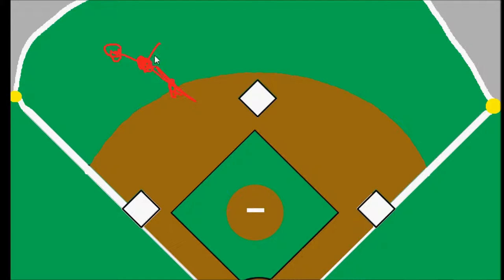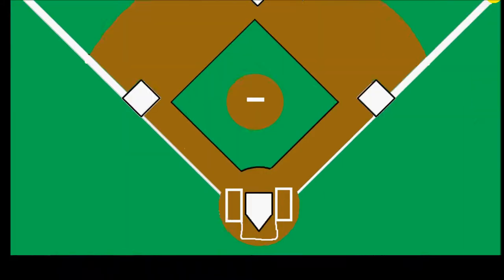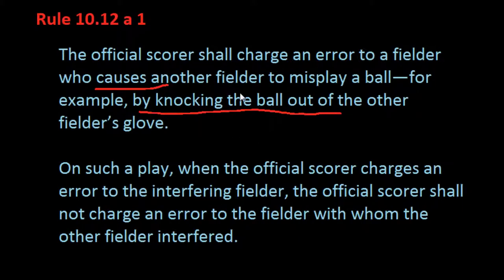Remember, not always do we have to charge an error. The rules which define an error say that the fielder only has to display ordinary effort — quote-unquote ordinary effort. So maybe if the ball was hit into the gap, say the left fielder is running over here, the center fielder started here, and they both have long runs, maybe one knocks into the other and the ball gets away — maybe that won't necessarily be an error at all. Maybe it'll be a hit. But for the most part, remember, it's the fielder who causes the misplay of the ball who is charged with the error.